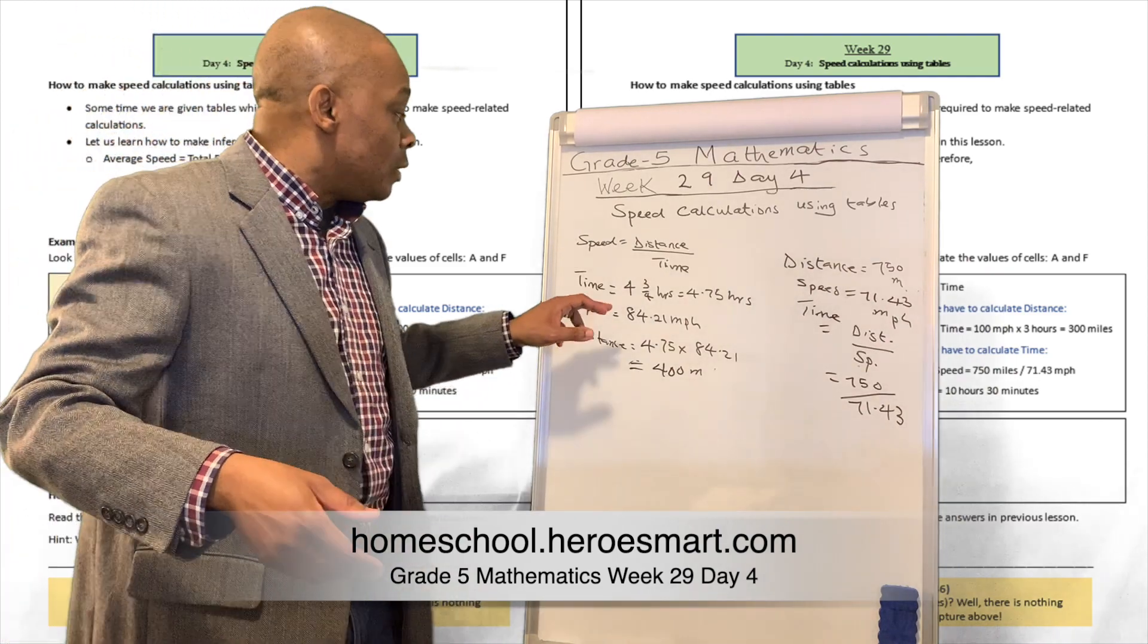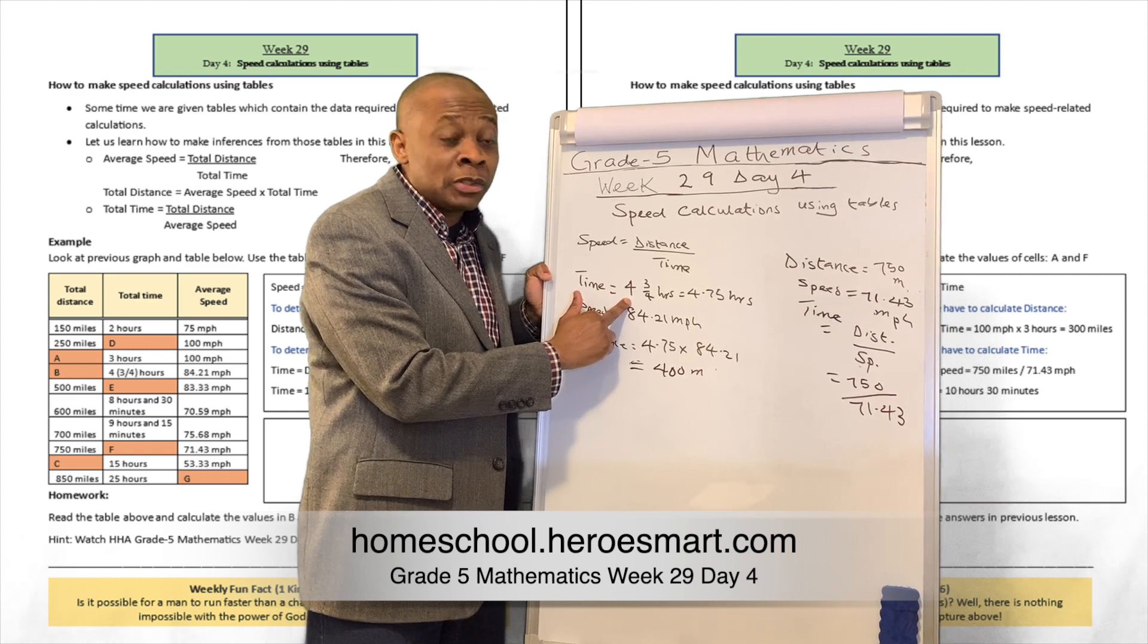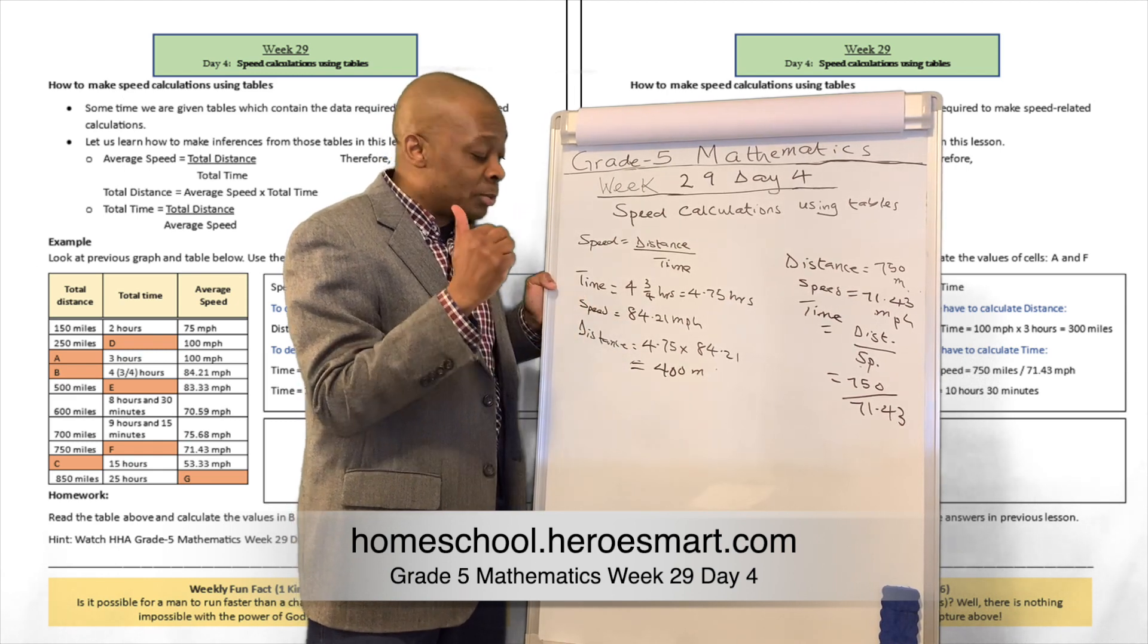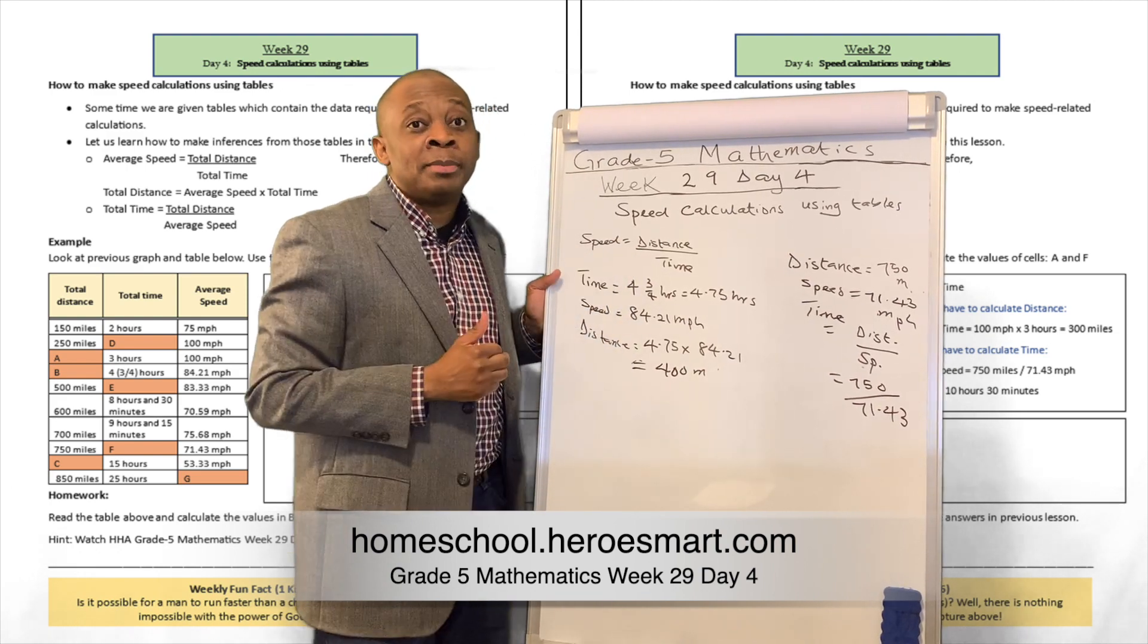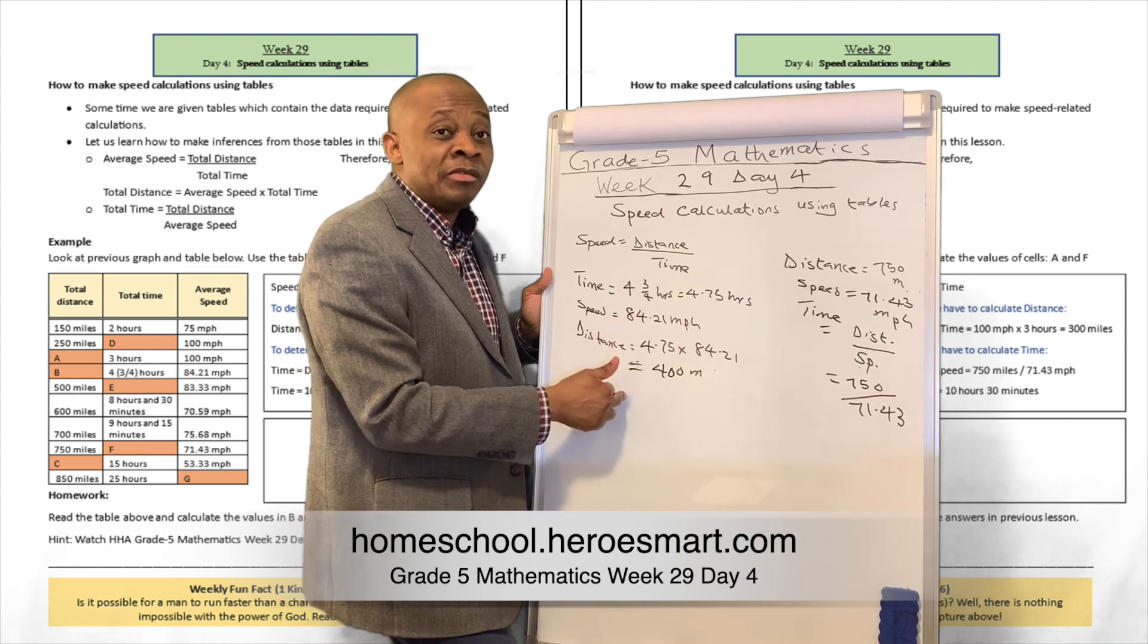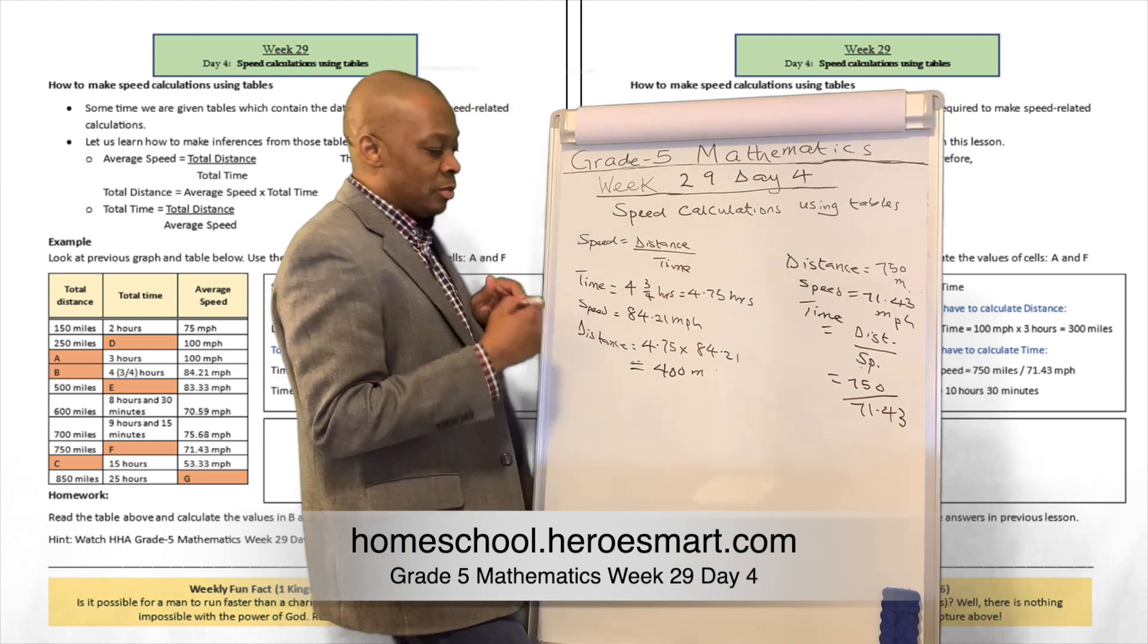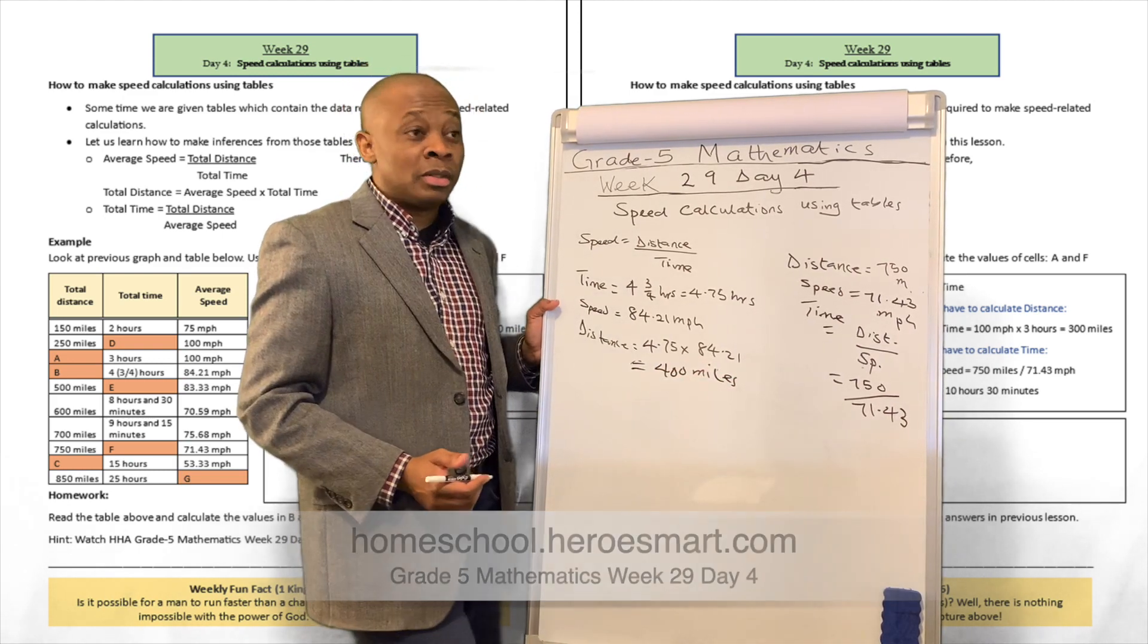Well, in number B, they gave us the time to be equivalent to 4.75 hours or four hours and three quarters of an hour. And then they gave us the speed to be equivalent to 84.21 miles per hour. What is the distance? Well, distance is going to be equivalent to speed multiplied by time. And that's exactly what we did over there. 4.75 multiplied by 84.21. You're welcome to use your calculator. That's going to be 400 miles for you. So you want to make sure you call this 400 miles, not meters, 400 miles.